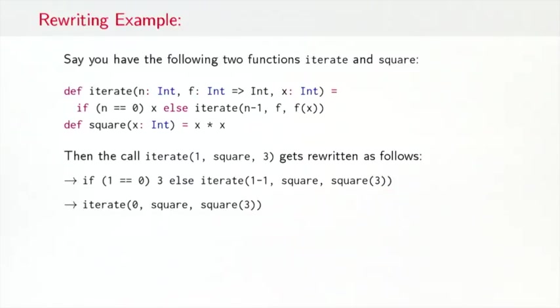The next thing that happens is that you do two auxiliary reductions. The first one would simplify the arithmetic expression 1 equals 0 to false. And then this next reduction would immediately simplify the if-then-else by saying, well, if false, something else something takes the else part. In the next step, then, we would have to rewrite the call square of 3 of the iterate application. So that would give you, obviously, 3 times 3 by simply expanding the right-hand side of square.